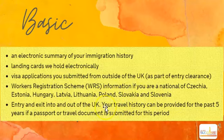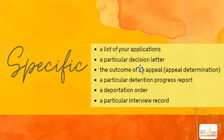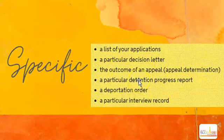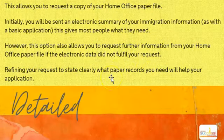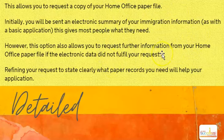The basic request also includes your travel history for up to five years. Moving on to specific requests — you can request up to five single documents of specific information, such as a list of all the applications you've made, a particular decision letter, the outcome of an appeal or appeal determination, a particular detention progress report, a deportation order, or a particular interview record. The last type, which I normally make on behalf of my clients, is called a detailed request. This is where you can get a copy of the paper file — the home office initially sends you a copy of your electronic summary, and if you'd like to know more you can request the paper file as well.